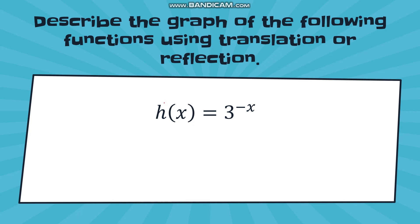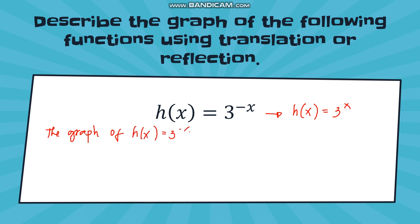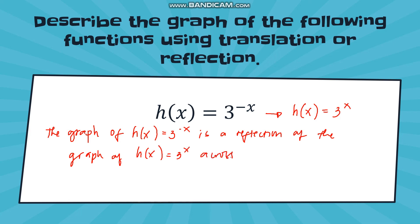For the last example: h(x) = 3 raised to negative x. This time we consider reflection. The functions must have the same base and same exponent but different signs. So h(x) = 3 raised to negative x is the reflection of h(x) = 3 raised to x. The description: 'The graph of h(x) = 3 raised to negative x is a reflection of the graph of h(x) = 3 raised to x across the y-axis.'